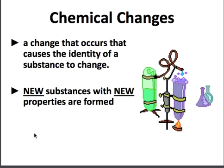On the other hand, a chemical change is a change that causes the identity of a substance to change — new substances with new properties are formed. What that means is you get something brand new. This is where we talk about chemical reactions. Anytime you do a chemical reaction, it's a chemical change — you're making a new substance, something completely different than the original.